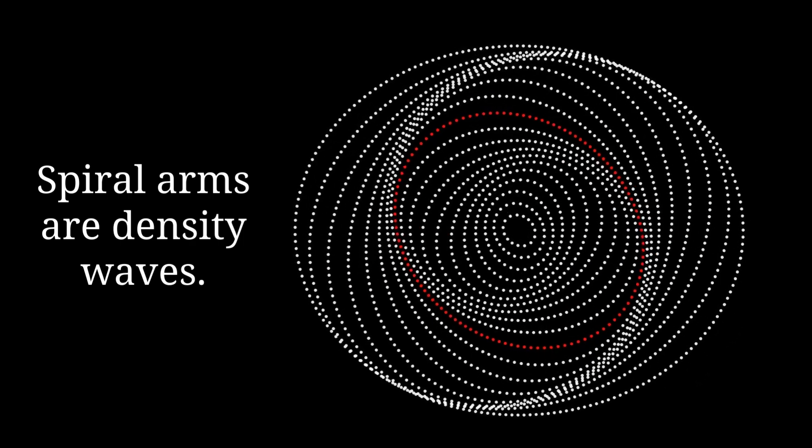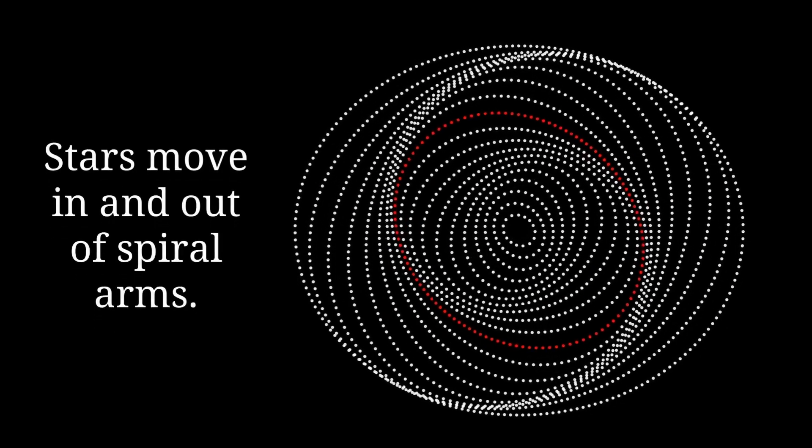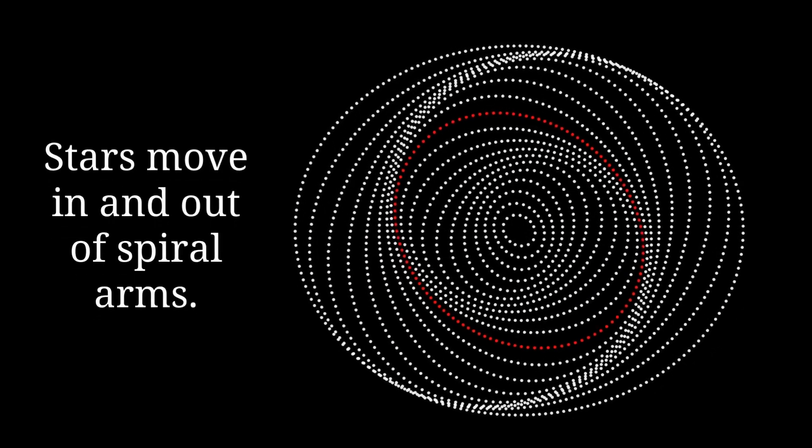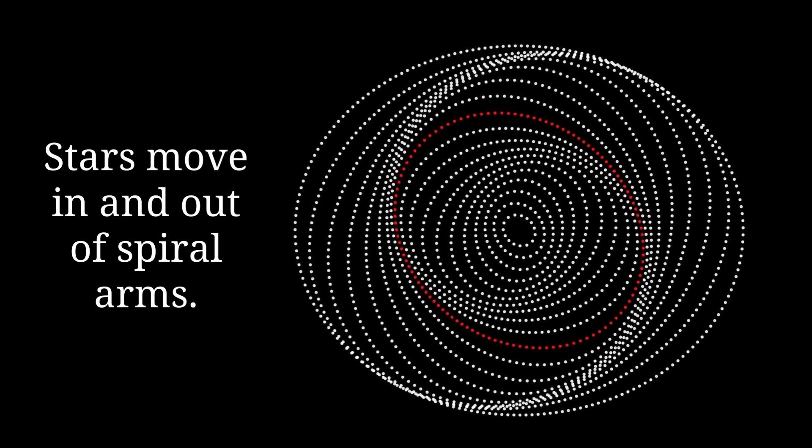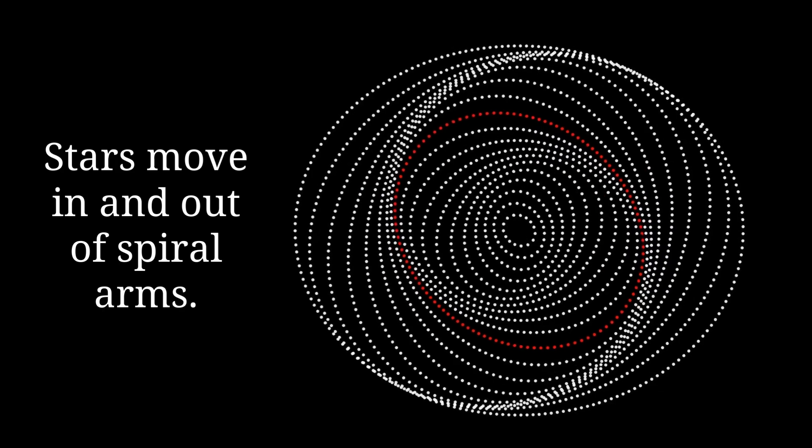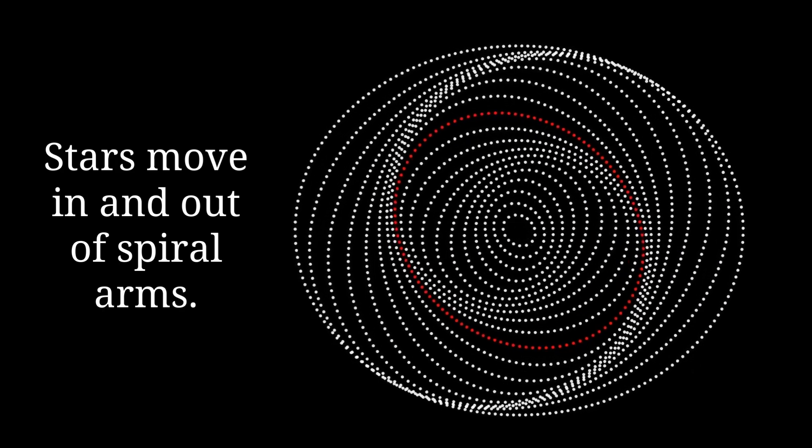Instead, they move in and out of the arms as they orbit through the galaxy. This theory provides an explanation for the endurance of spiral arms over time, and there is increasing evidence to support it.